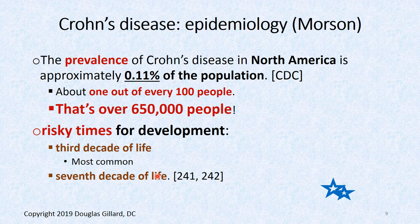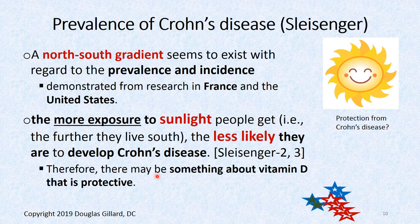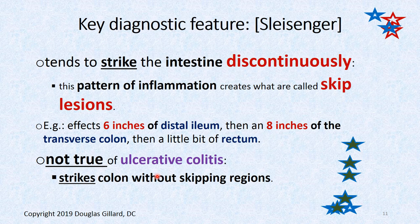There are risky time periods for first symptoms: the third decade of life is most common, and the seventh decade is the second most common. Studies in France and the United States have identified a north-south gradient where people exposed to more sunlight are less likely to develop Crohn's disease, suggesting vitamin D produced by sunlight may be protective.